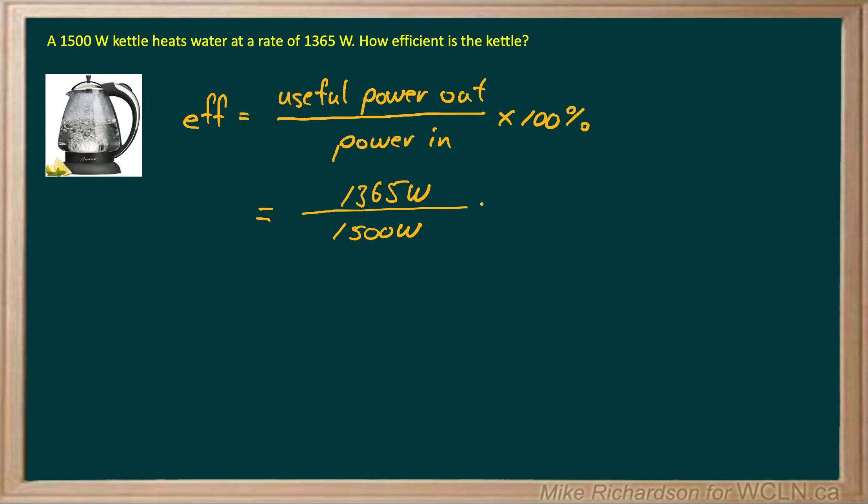So our useful power out is 1365, our power in is 1500 and when I do my equation I get 91% efficient, so fairly efficient kettle.